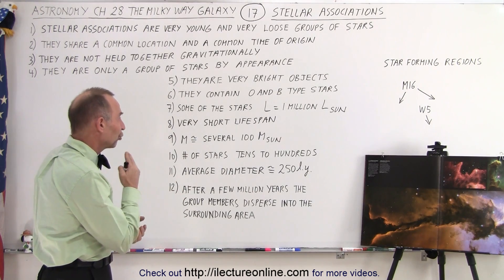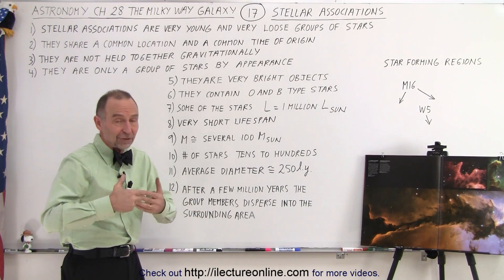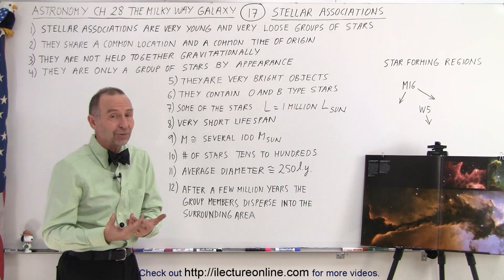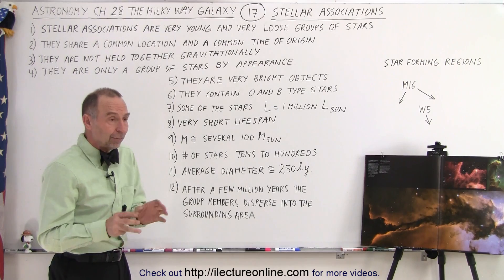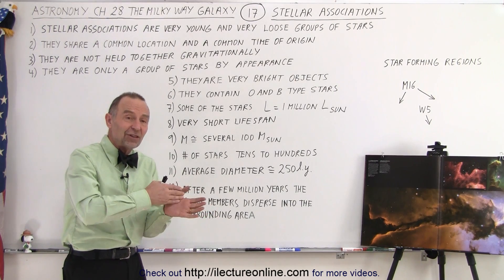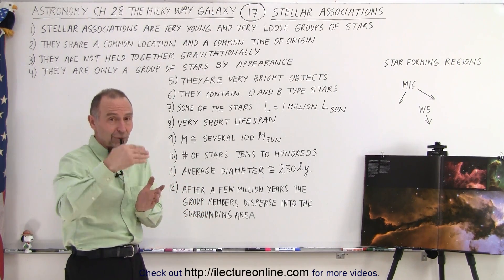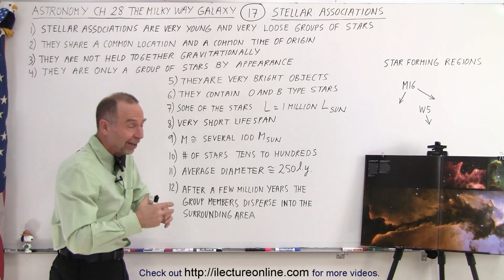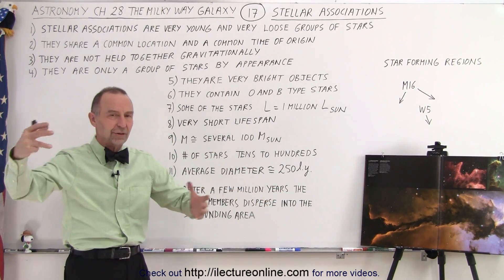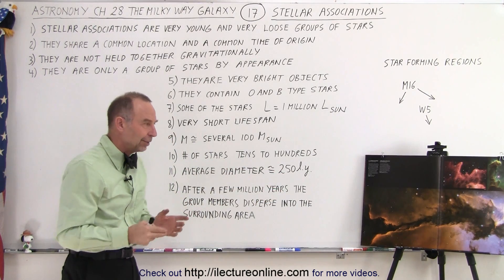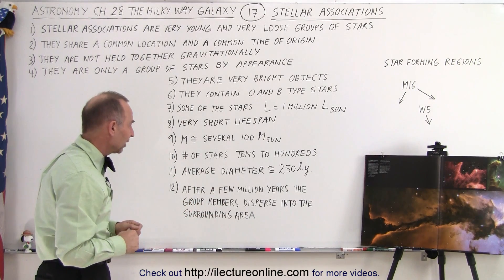They do have very short lifespans for two reasons. One is that if they're O and B type stars, they don't stay on the main sequence very long. But most likely, before they even get a chance to make it through their lifespan as a main sequence star — before they turn into red giants — they've already dispersed because of the gravitational attraction of other objects around them, and they no longer appear as a grouping of stars.